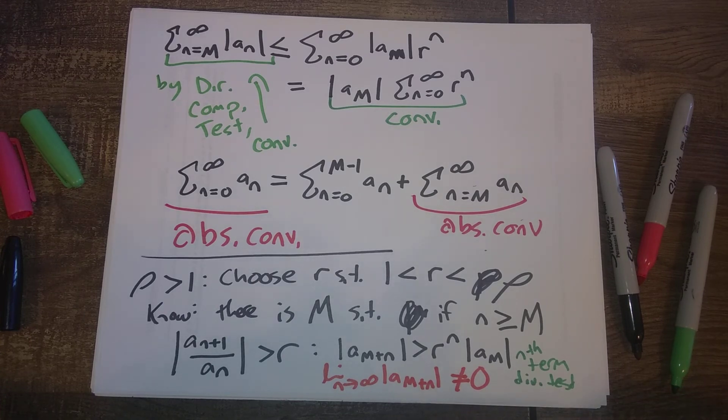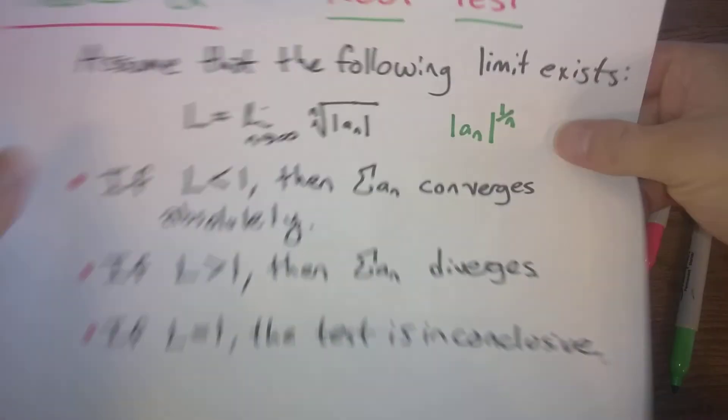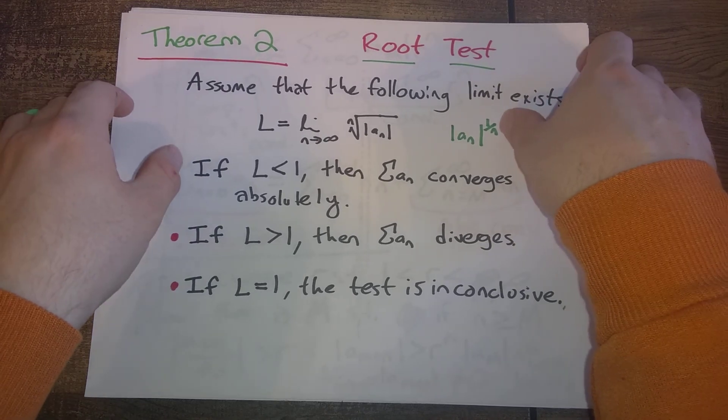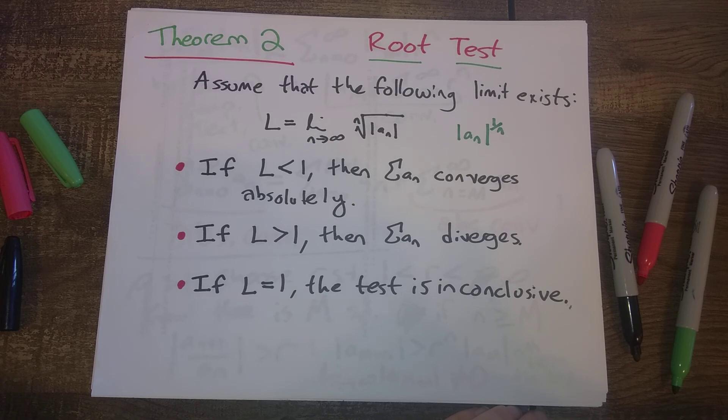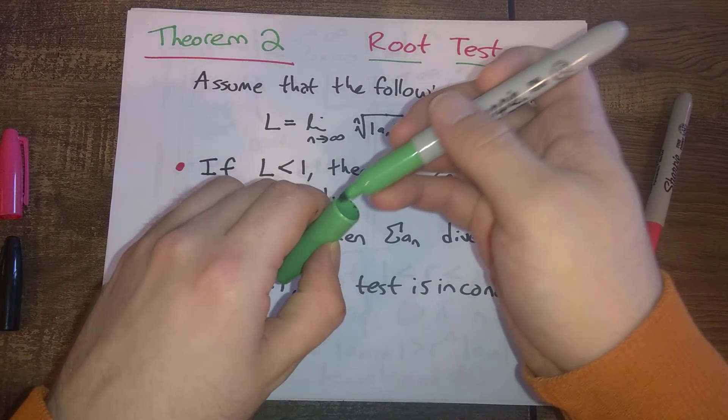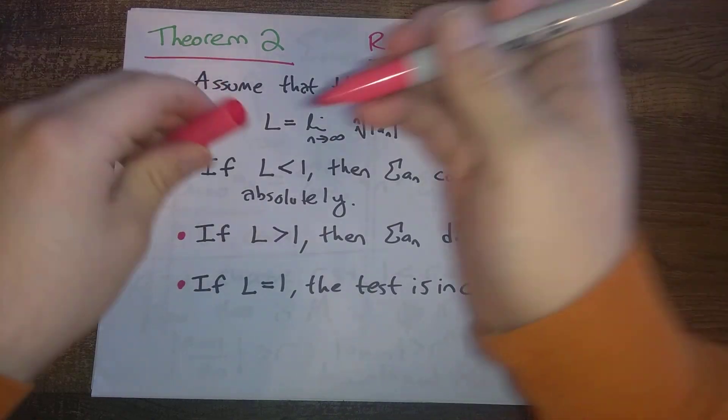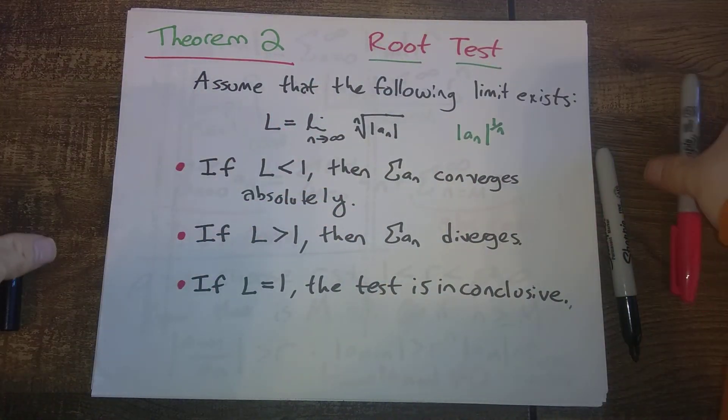You can take a look in the book if you want a more formal statement of the ratio test. We also in this section did not do a proof of the root test. I'll just say that if you want to prove the root test, you prove it also in a similar way by comparing to some geometric series. Okay, so that wraps up section 10.5.